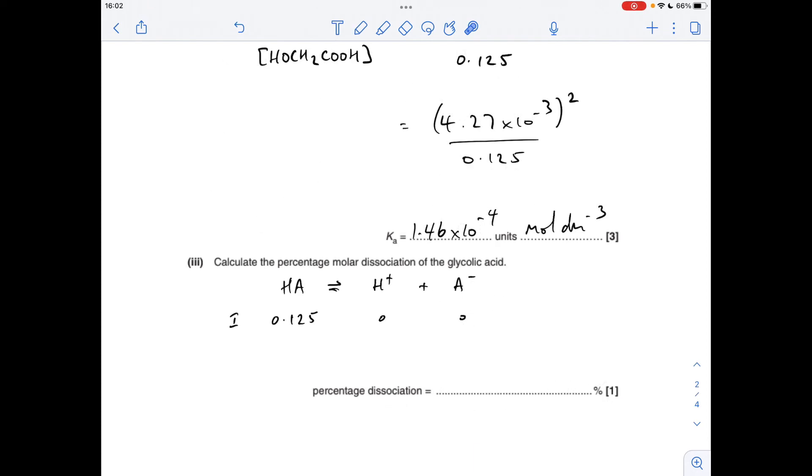And the final part of B, a bit of a sting in the tail, this, and really stingy amount of marks. One mark, I think, is not really enough for this, but there you go. So I've got the generic dissociation for a weak monobasic acid, which glycolic acid is. So the initial concentration of the HA, the glycolic acid, is that. Obviously, we don't have any of these yet.